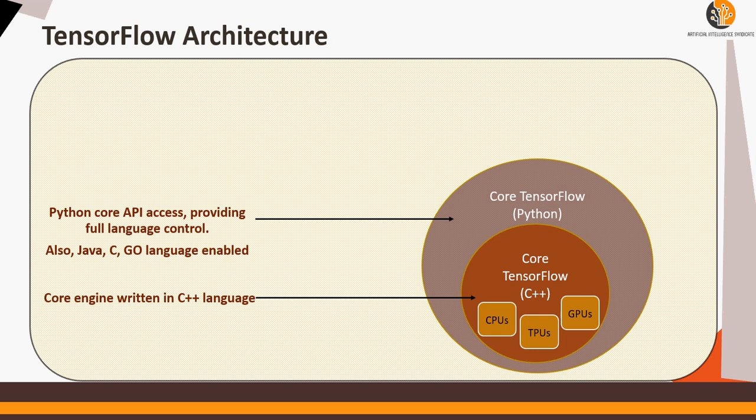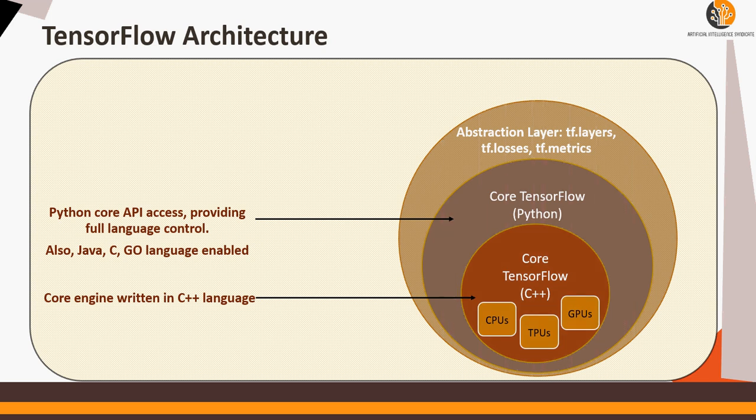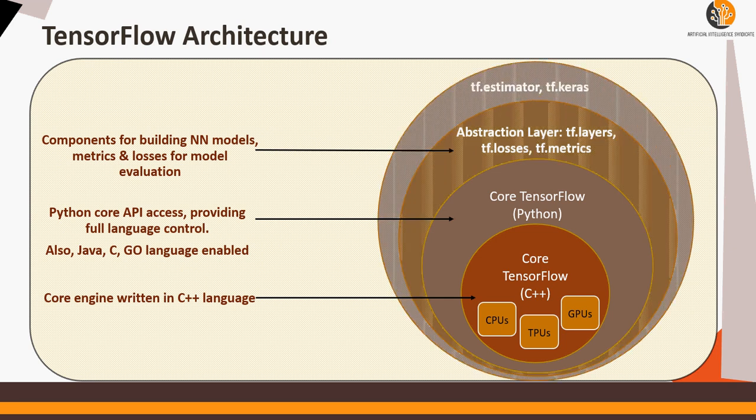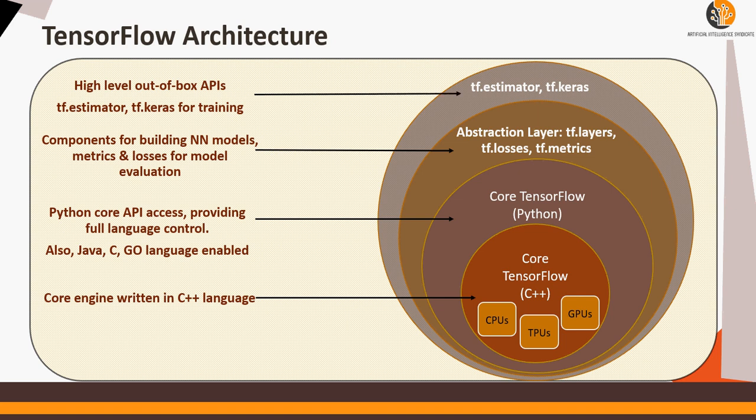Next layer is an abstraction layer which consists of losses, metrics, and other important functions which are used for model evaluation and neural network building.